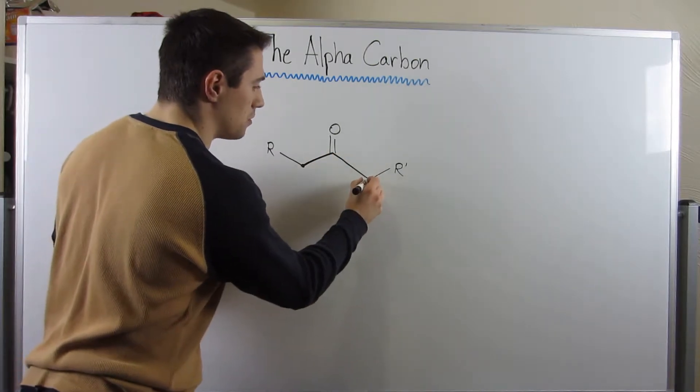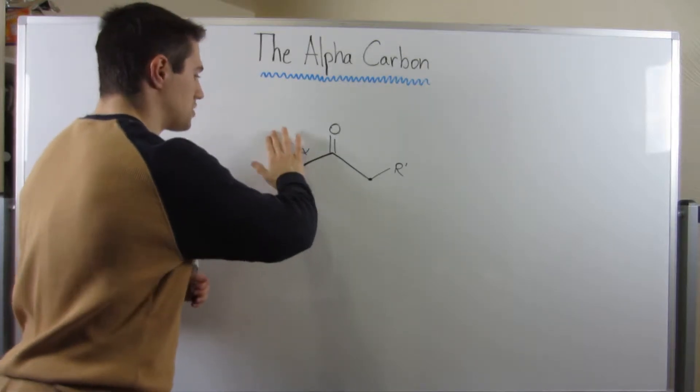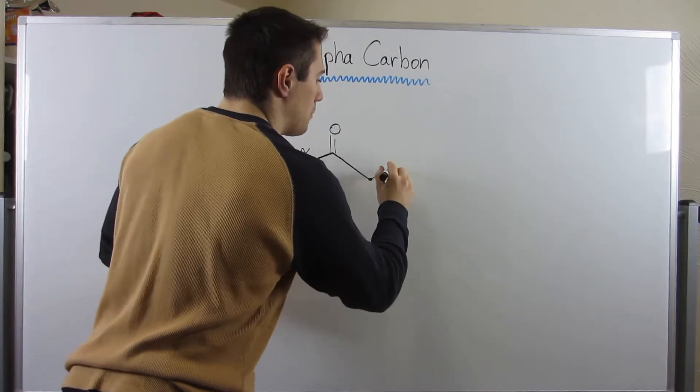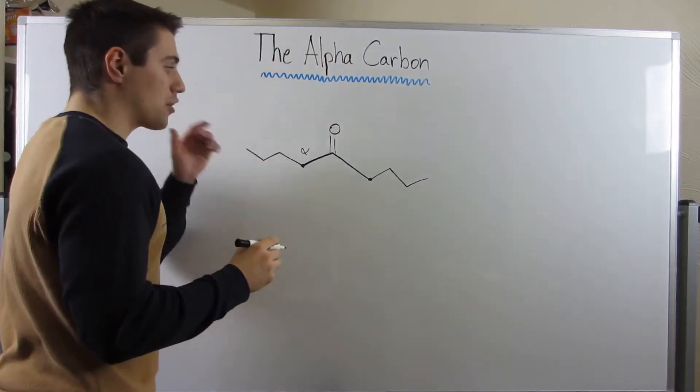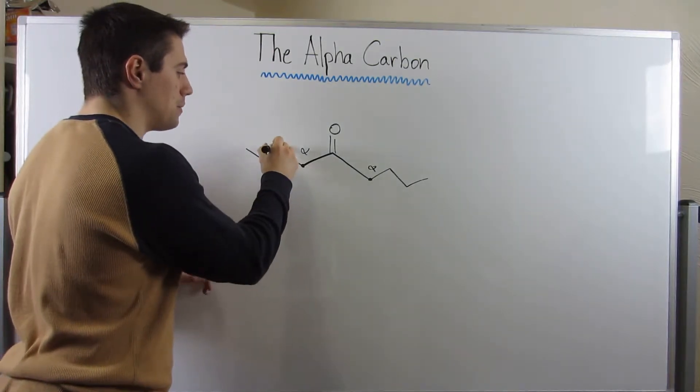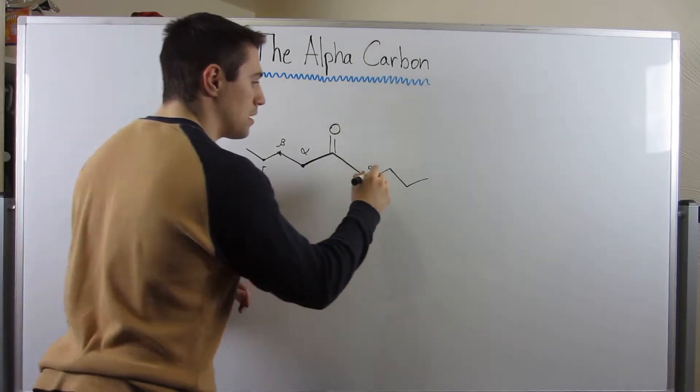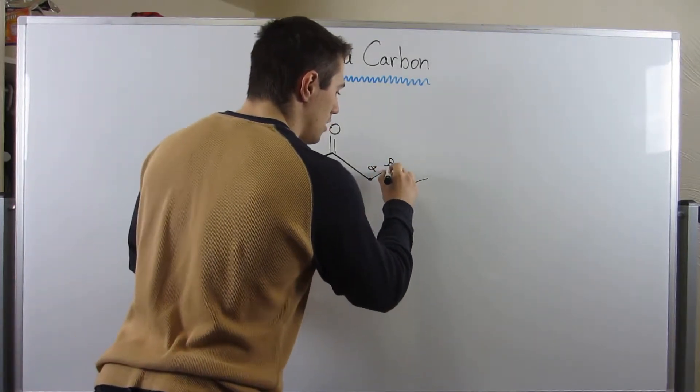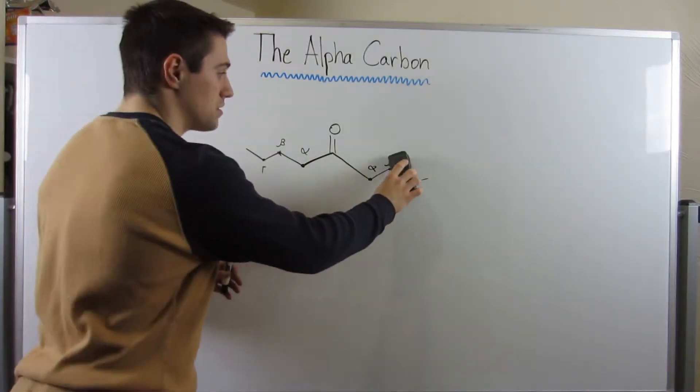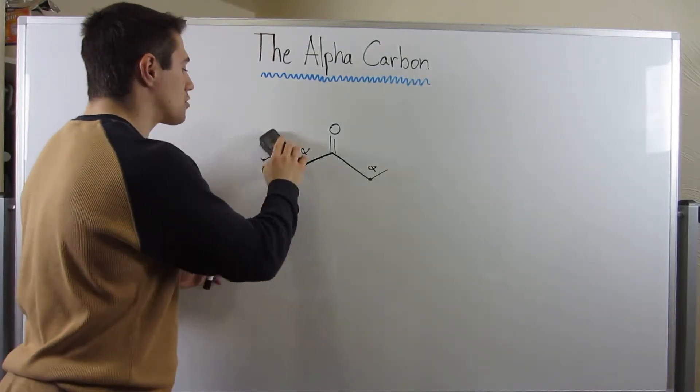Here's what the alpha carbon is. Directly off of the carbonyl, this is what you would call the alpha position. And actually, let me just extend this just a little bit. The way we kind of name the carbons off of the carbonyl is that directly to the right or left, that is the alpha position, then the carbon after that would be the beta carbon, this would be the gamma carbon. So, kind of just like a little bit of a Greek alphabet lesson.